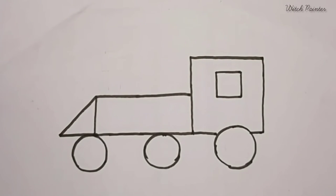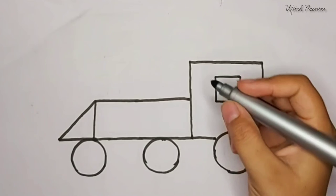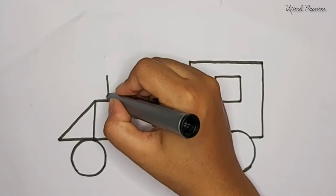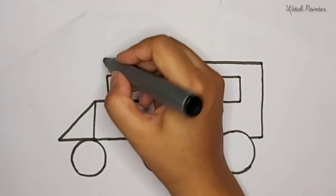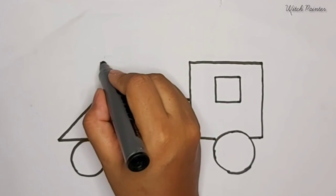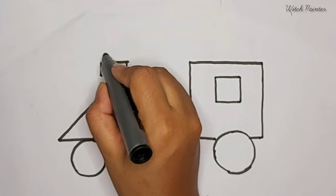Now we will add a chimney for the steam to come out from the train. Draw a rectangle, then draw another rectangle like this, and draw another smaller rectangle.